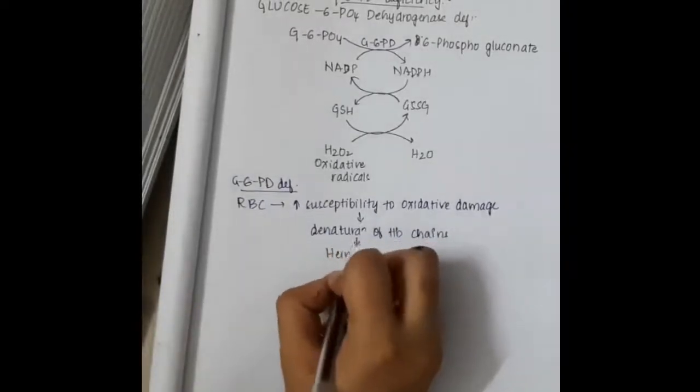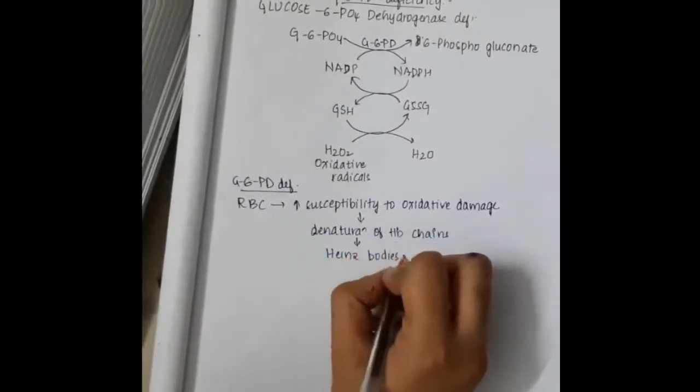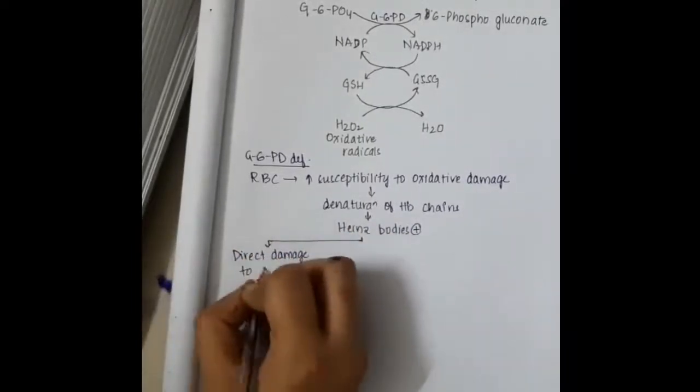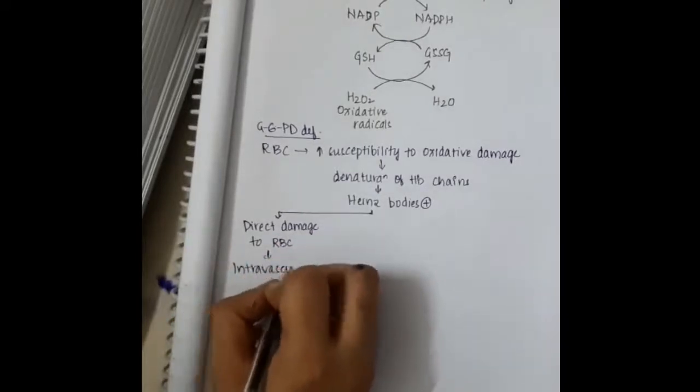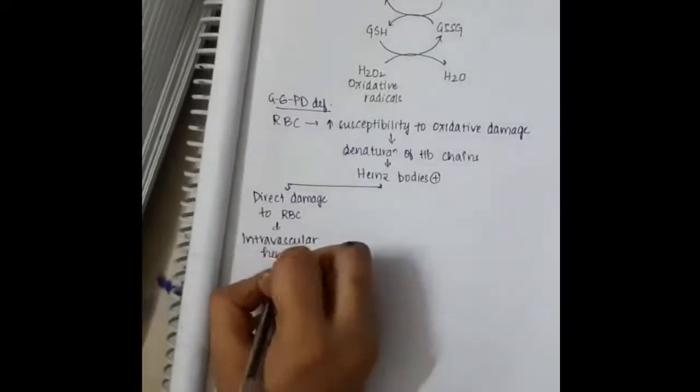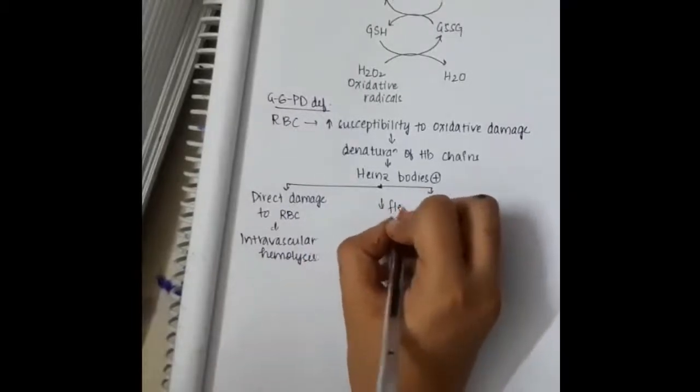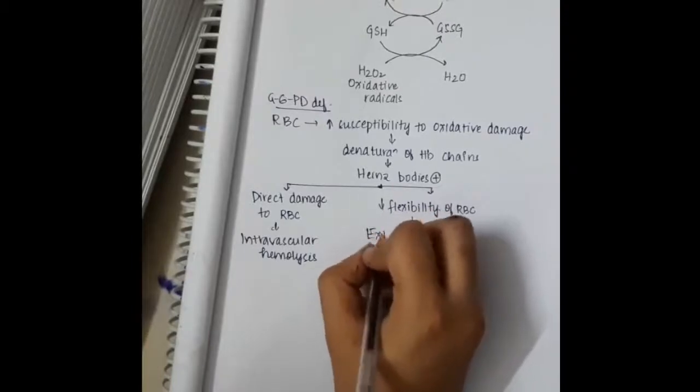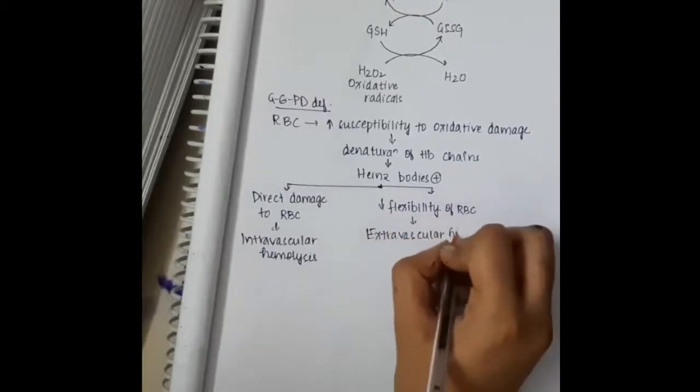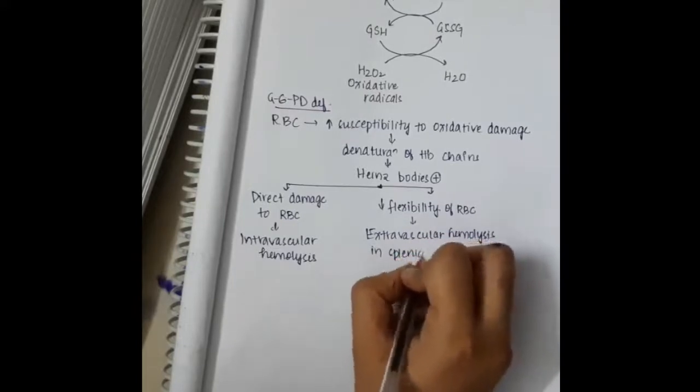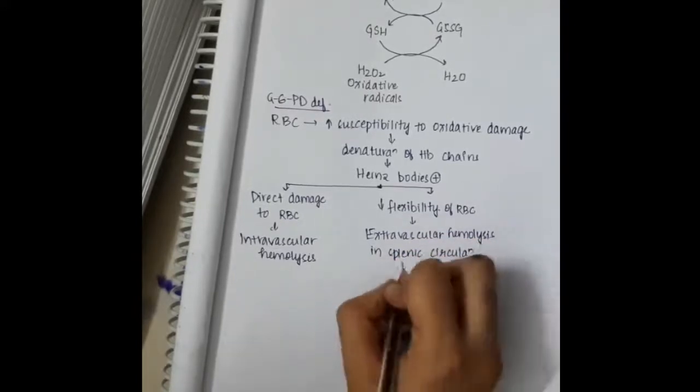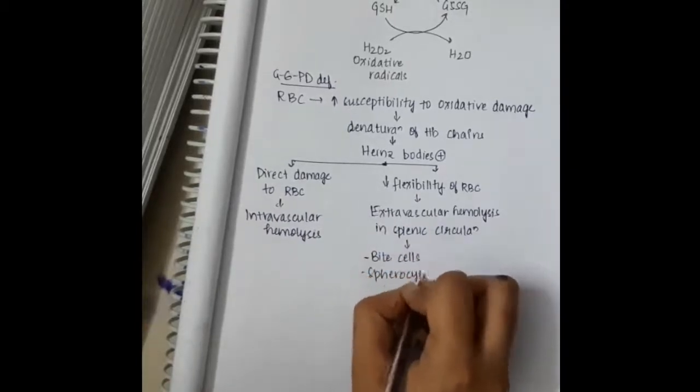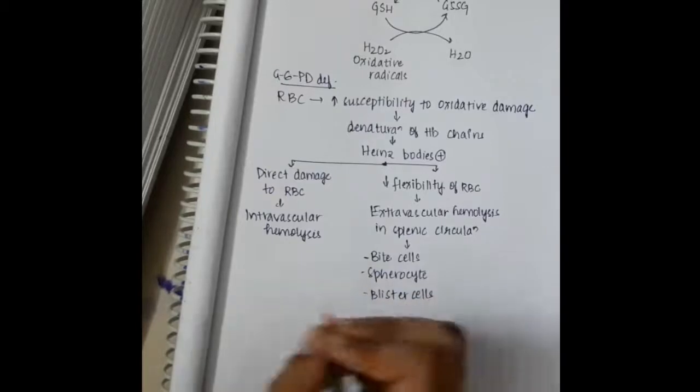Whenever there are oxygen free radicals, they will denature the hemoglobin chains. These hemoglobin chains will form Heinz bodies. Direct damage to RBC leads to intravascular hemolysis. Because of these Heinz bodies, the flexibility of RBC decreases, thus extravascular hemolysis occurs in splenic circulation, and these hemolyzed cells form bite cells.